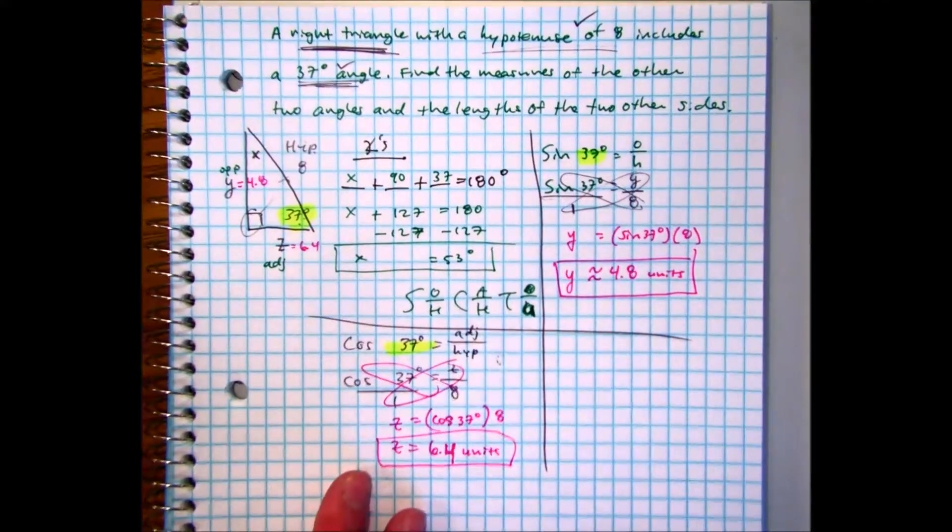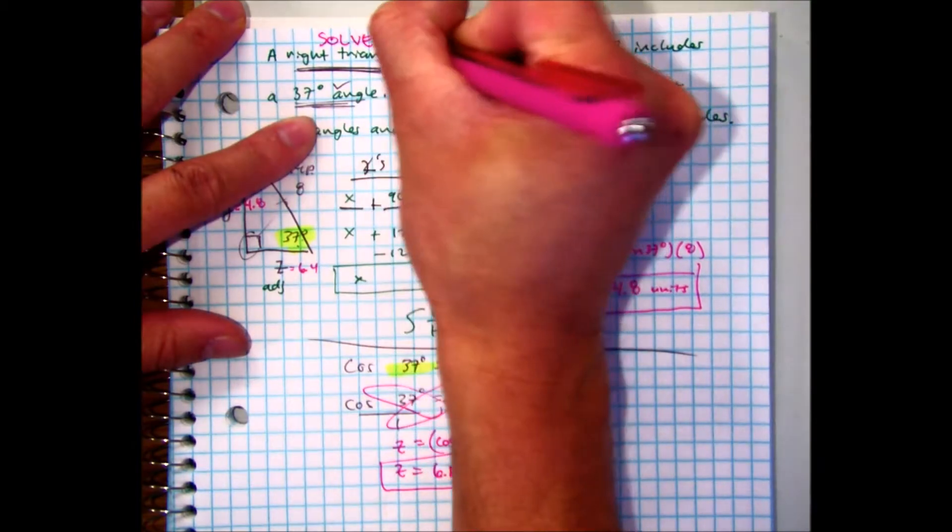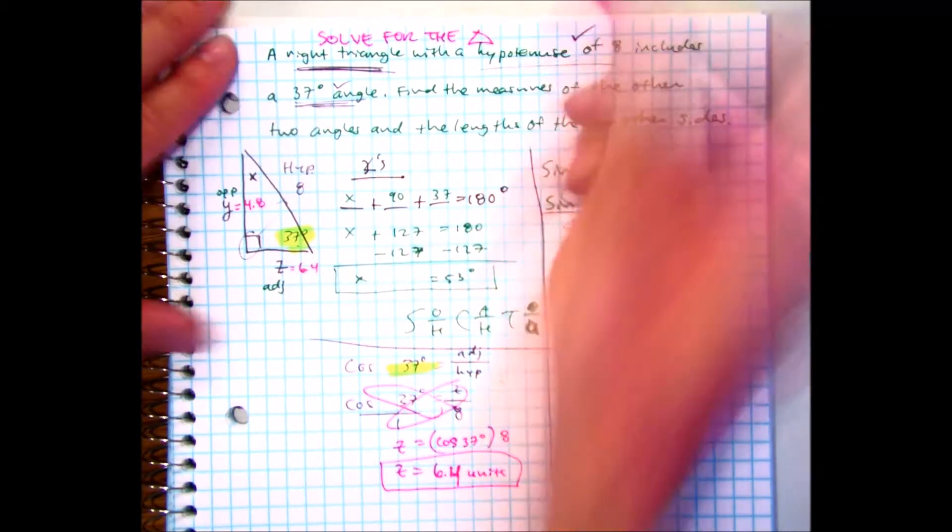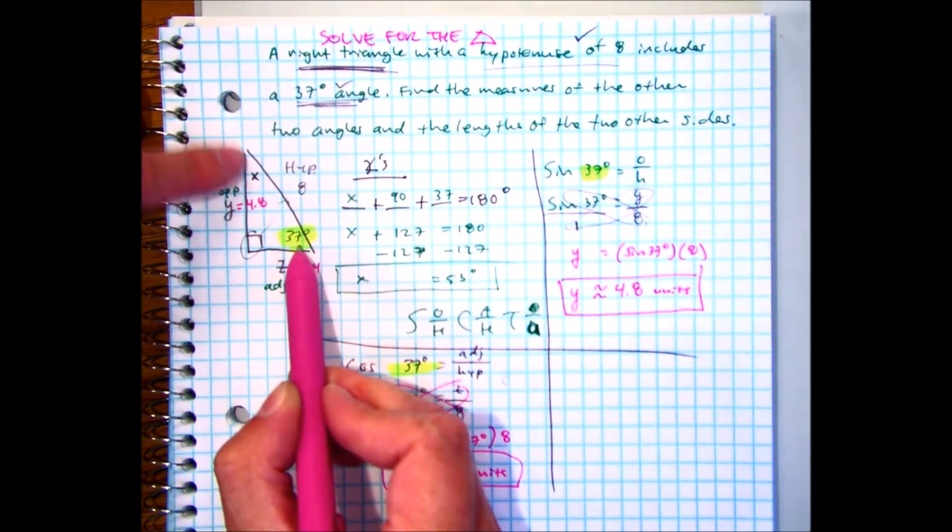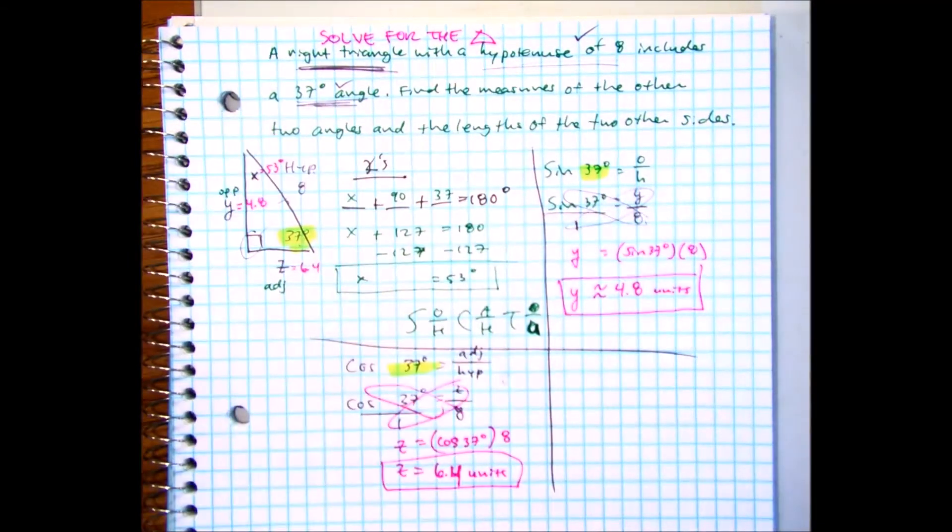So in this problem, it doesn't tell us, but kind of like a big idea here, you are solving for the triangle. Solving for the triangle basically means you are finding every side length and every angle, solved for. You have a number or a length.